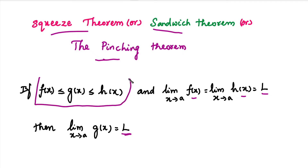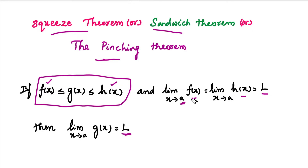That is, there are 3 functions: f(x), g(x), and h(x). These 3 functions satisfy the condition, where f(x) is on the left end and h(x) is on the right end. The limit values of these two functions at point a are the same. Suppose that value is L. Then the middle function g(x) also has the same limit value L.